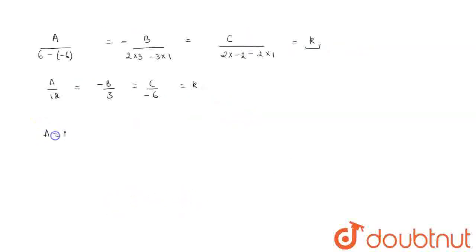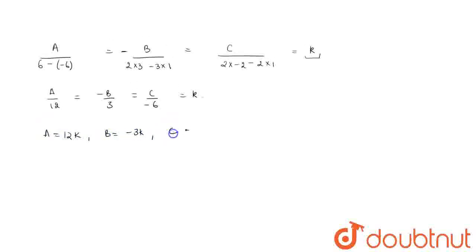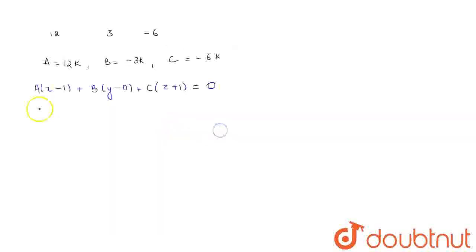So a is 12k, b is -3k and c is -6k. So we will put the value of a, b, c in this equation.